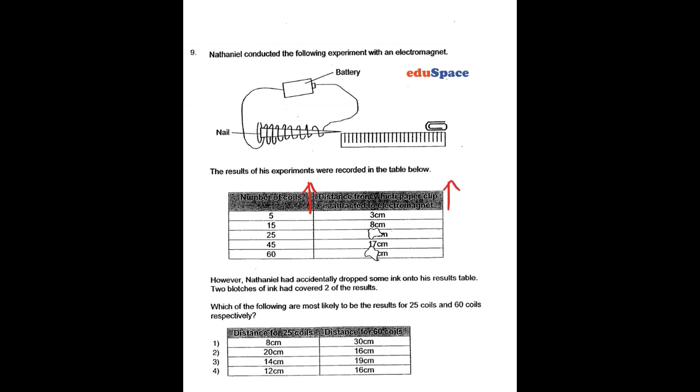So this will increase as well. When the number of coils is 25, the distance should be between 8 and 17, while the number of coils at 60 would mean that the distance should be greater than 17 cm.